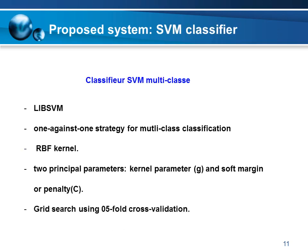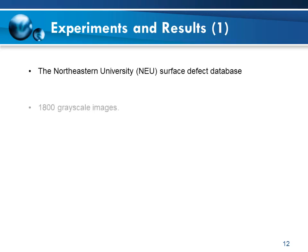For implementation, the LIBSVM library was used. It supports multi-class classification using a one-versus-one strategy with an RBF kernel. It has two principal parameters: kernel parameter gamma and soft margin or penalty C. The determination of the optimal values of those parameters is based on the grid search method using five-fold cross-validation.